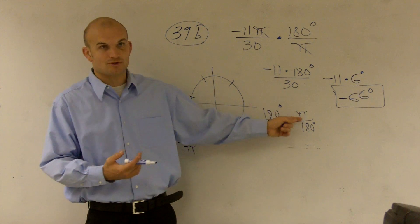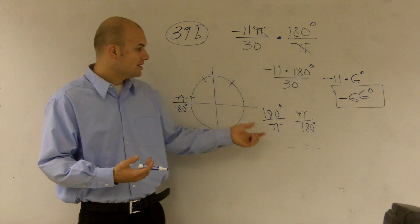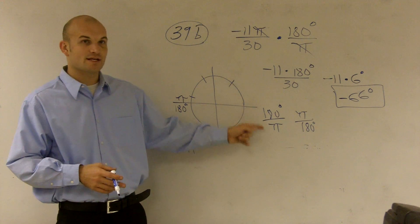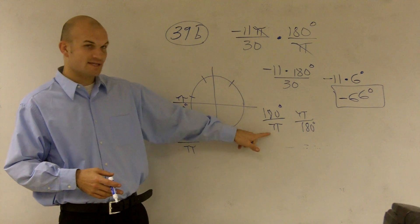180 divided by pi is not equal to pi divided by 180. That's not what I'm saying. But I'm saying you can compare these. These two distances are equal to each other. 180 degrees is equal to pi.